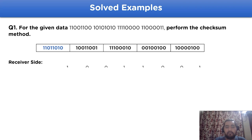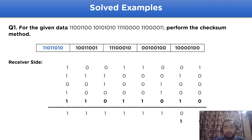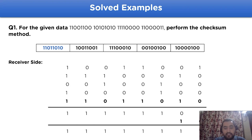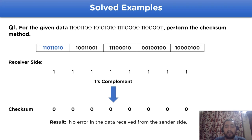At the receiver side, we again perform the addition method. The value comes out with 2 extra carry bits. We add the carry back to the addition value and get new data that is all 1s. Performing one's complement on this value gives all 0s. That means the checksum value is 0 at the receiver side, which indicates there are no errors in the received data.